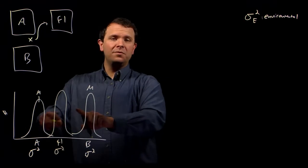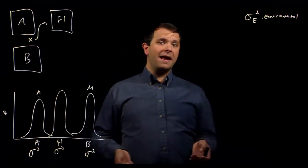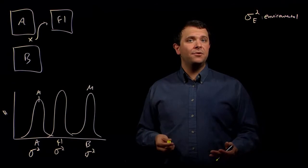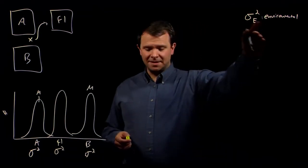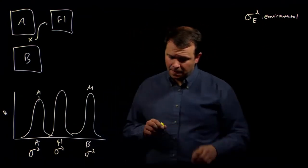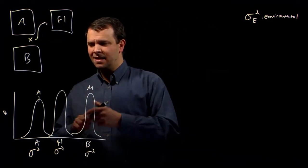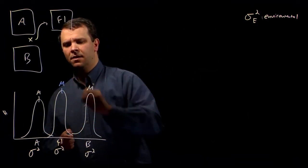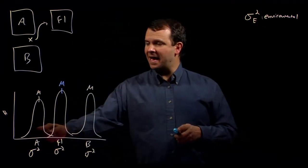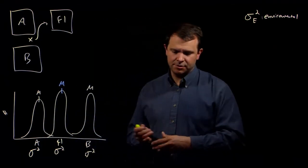The only variance here, the only spread here remains due to environmental differences. This is still environmental variance. But the mean, as you can see, has moved to be between the means of our A distribution and our B distribution.